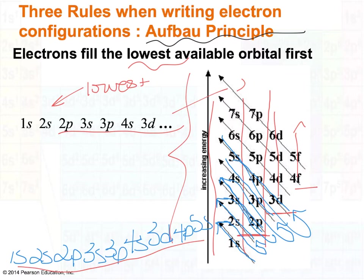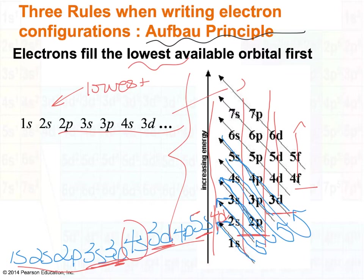If you practice enough electron configurations, the ordering will automatically get memorized. Notice that we have 3s and 3p, but then instead of 3d right after 3p, the 4s interrupts the 3 energy level — that is a typical pattern. For example, after 5s would come 4d, and 5s also breaks up the sequence between 4p and 4d. That's an important little glitch to remember. You'll get more comfortable with the ordering the more you practice.